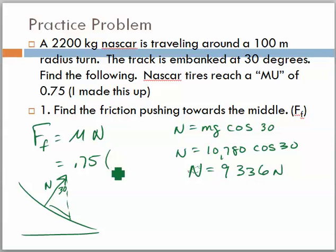So, I'm going to put that in for the normal, 9,336 newtons. So, what is 75% of that? Our force of friction, in this case, turns out to be 7,002 newtons.